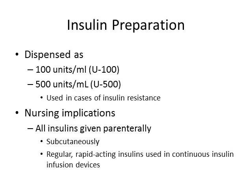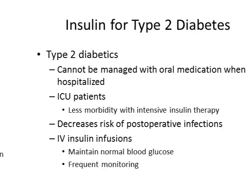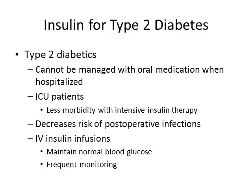For Type 2 diabetes, we hope to manage with oral medications, but sometimes insulin is also needed. If they're in the ICU or have multiple comorbidities with bouncing blood sugars, they may be candidates for insulin. With tightly controlled blood sugars post-operatively in Type 2 diabetics, there is decreased risk of infection. Frequent monitoring is required when insulin infusions are running.